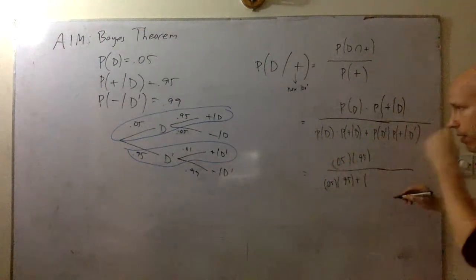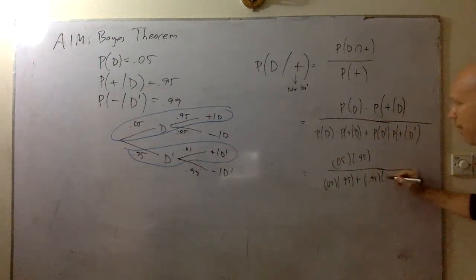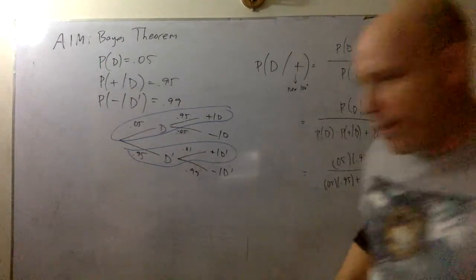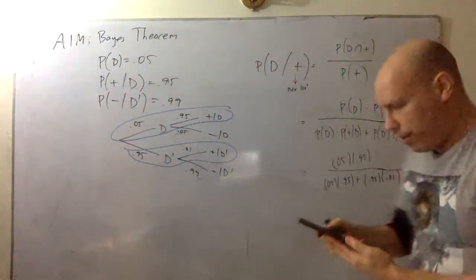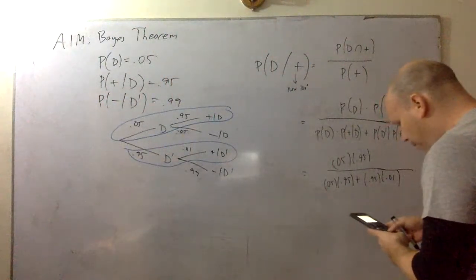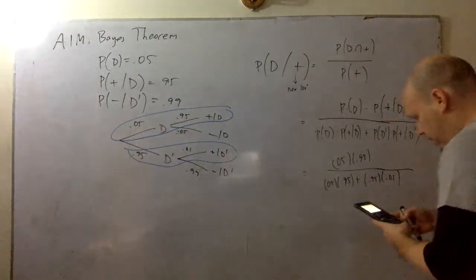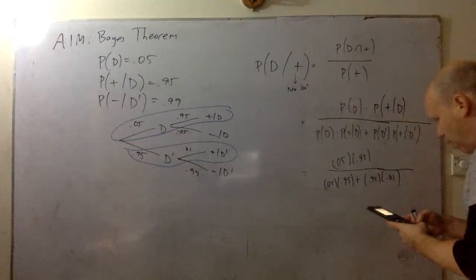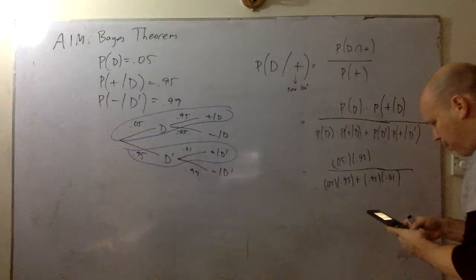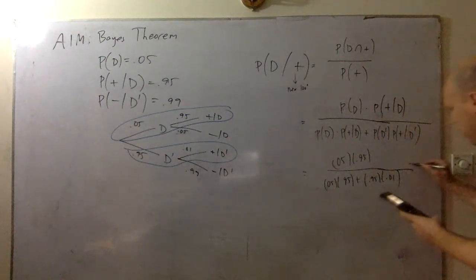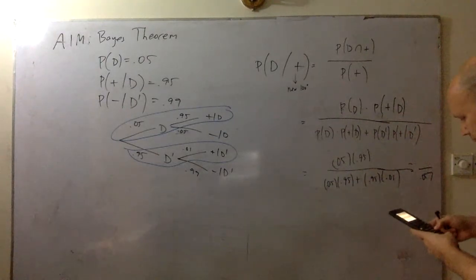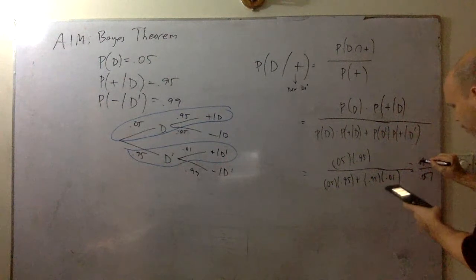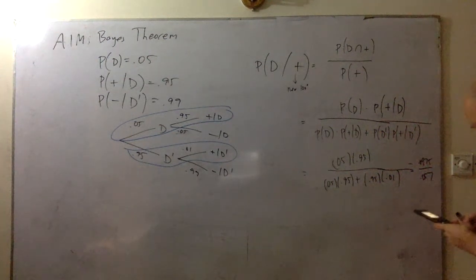So we have 0.05 times 0.95 over 0.05 times 0.95 — the first option — plus the false positive, which in the second case is 0.95 times 0.01. Let me get my calculator. So we have 0.05 times 0.95 plus 0.95 times 0.01. That gives us 0.057. And then 0.05 times 0.95 equals 0.0475. Dividing that by 0.057 gives 83.3.